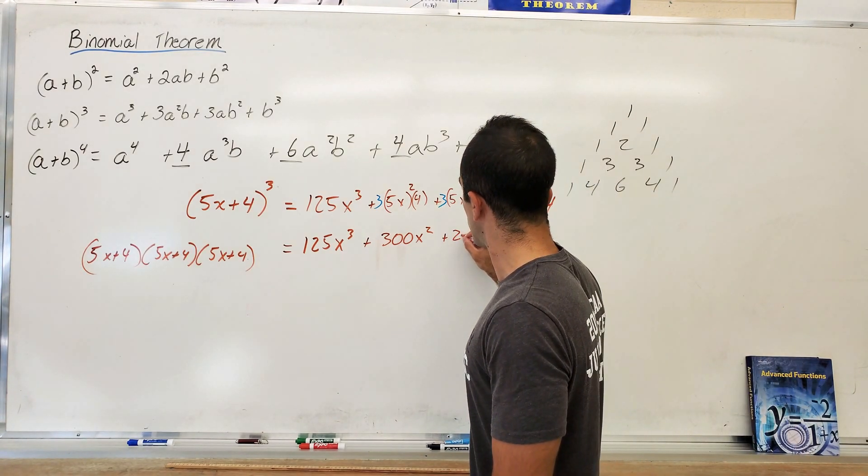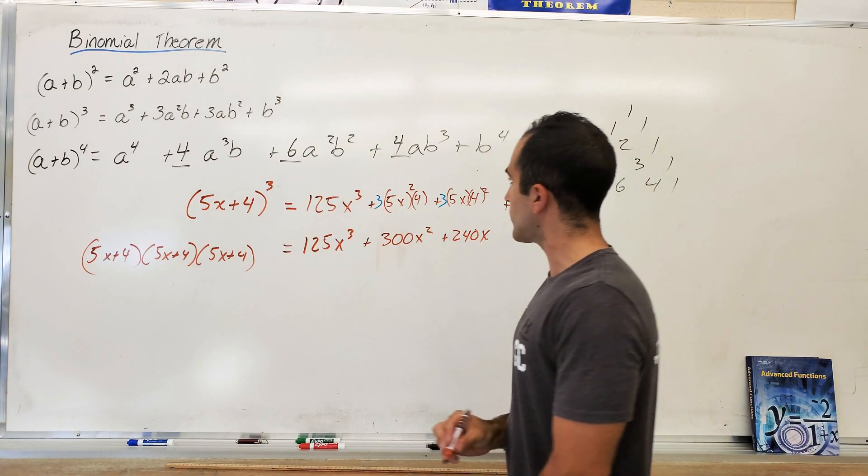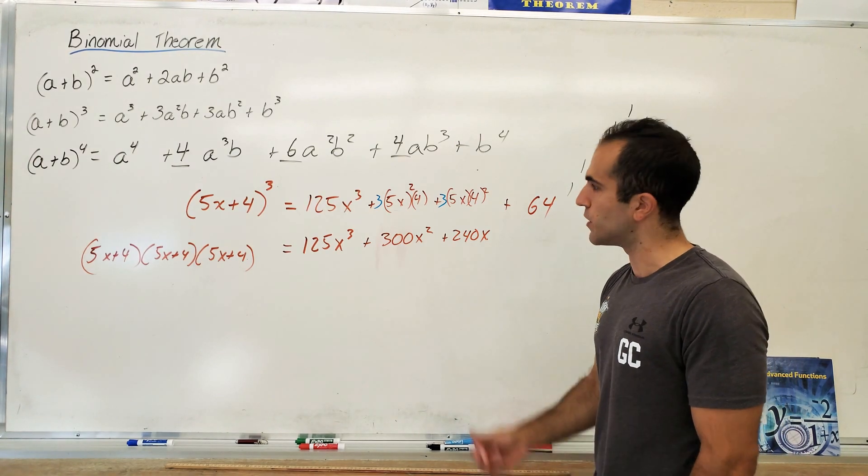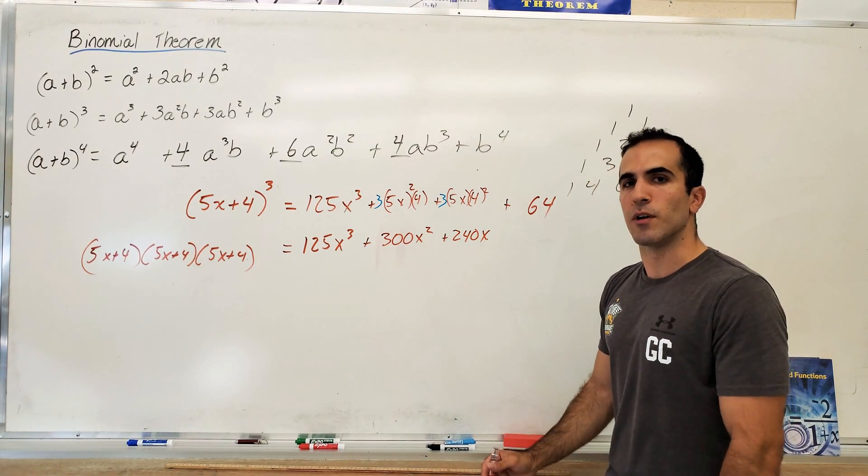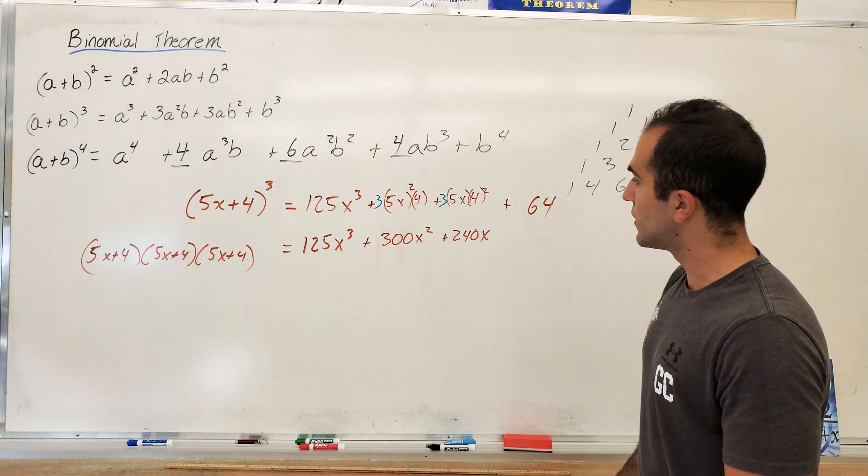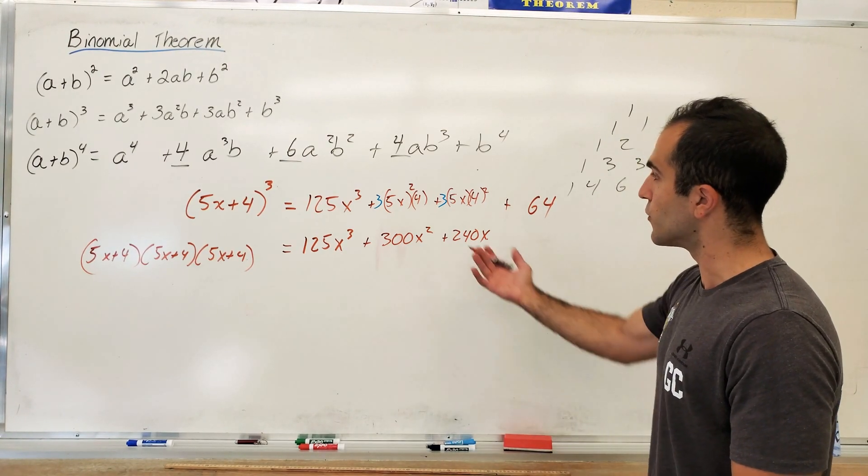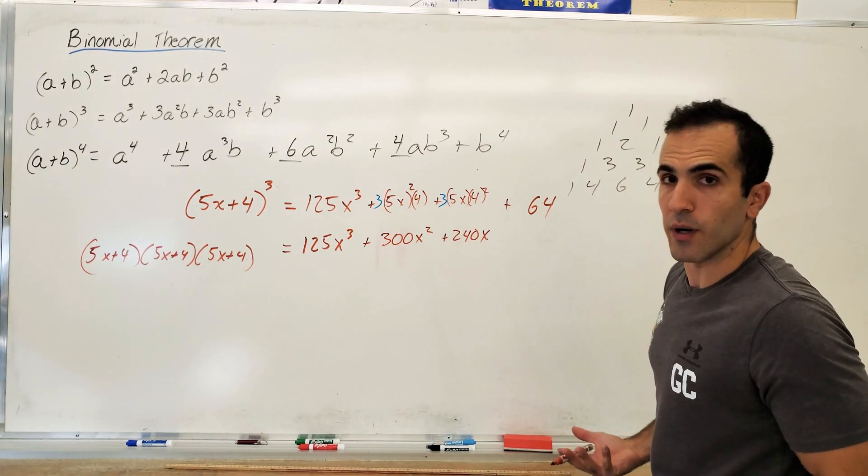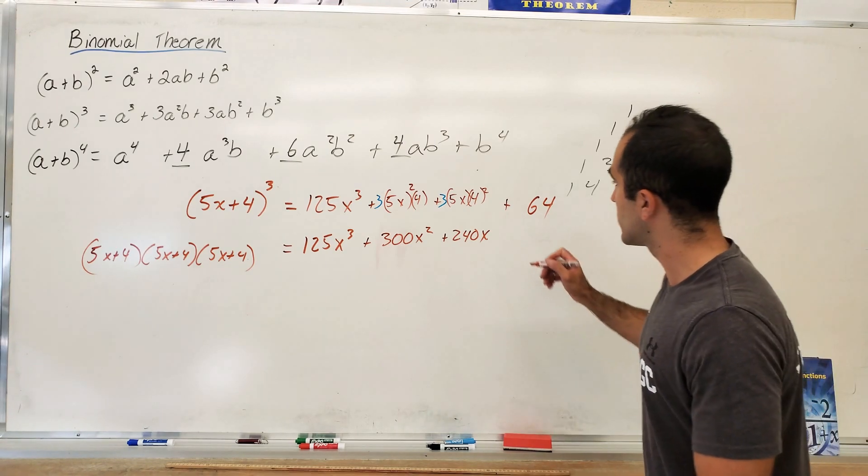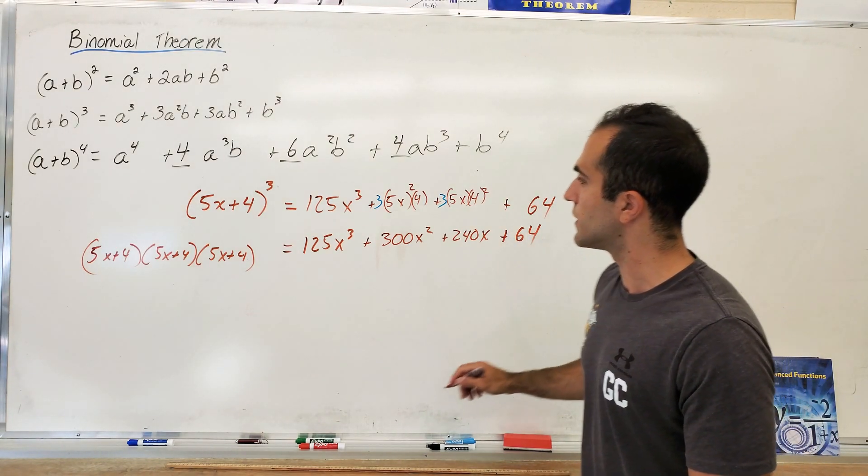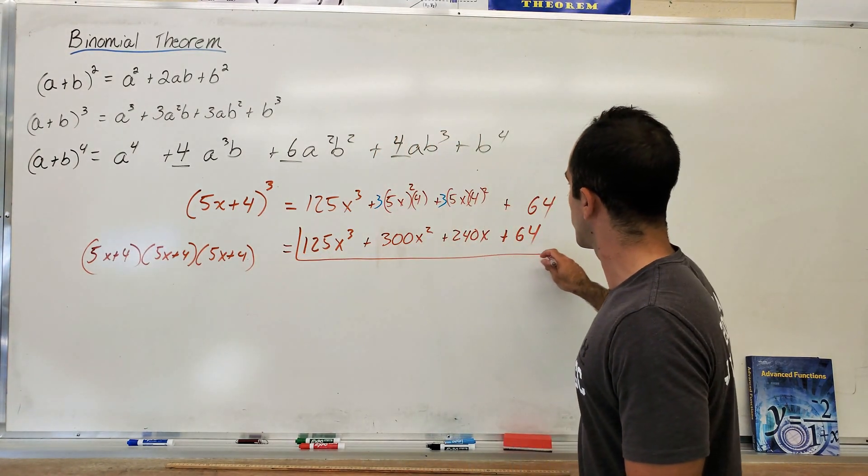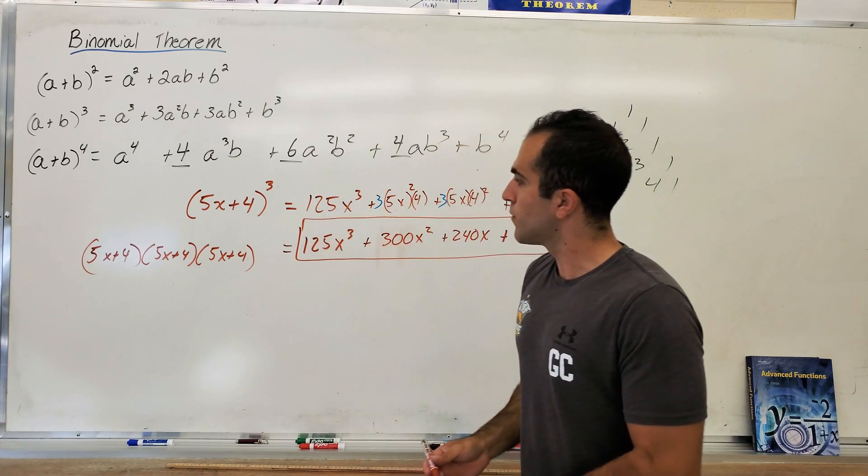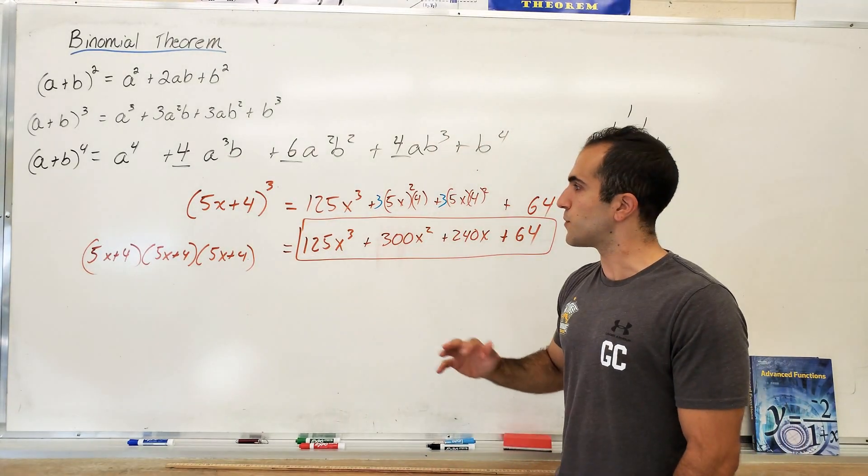What about over here? 16 times 15. Mmm, I'd rather do 16 times 5 is what? 80. 80 times 3: 8 times 3 is 24, adding a zero, 240. Obviously you can pick up a calculator, but I like deciding what to multiply first in order to do it faster. You usually pick up your calculators because you don't want to do 15 times 16. Neither do I. Do it a different way. Plus 64. There's your final answer.